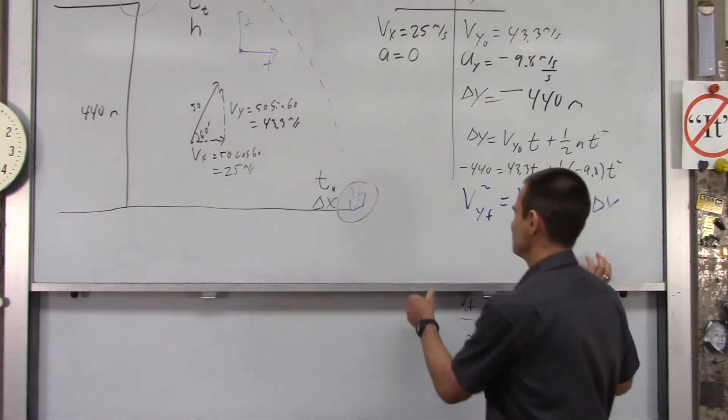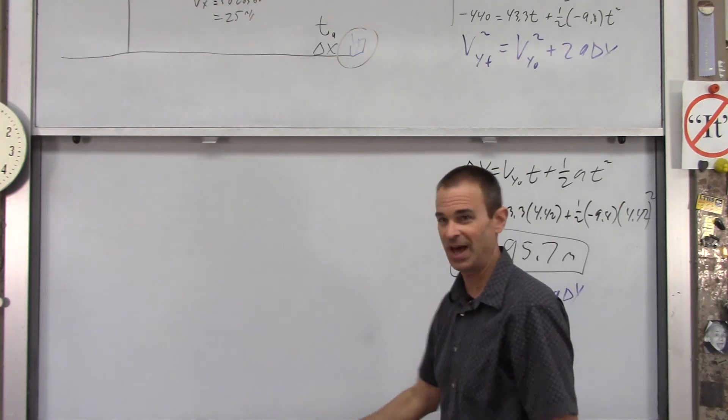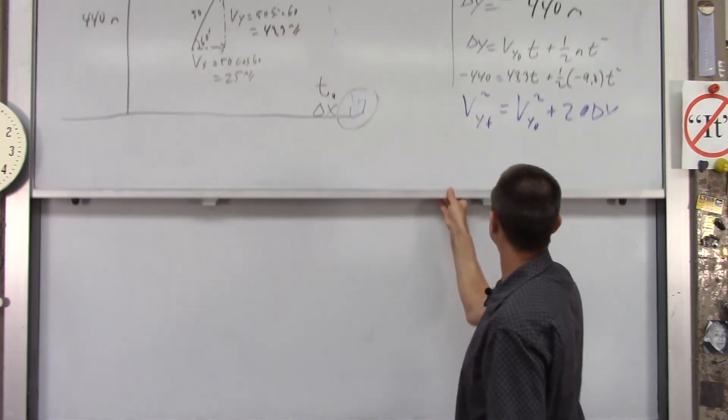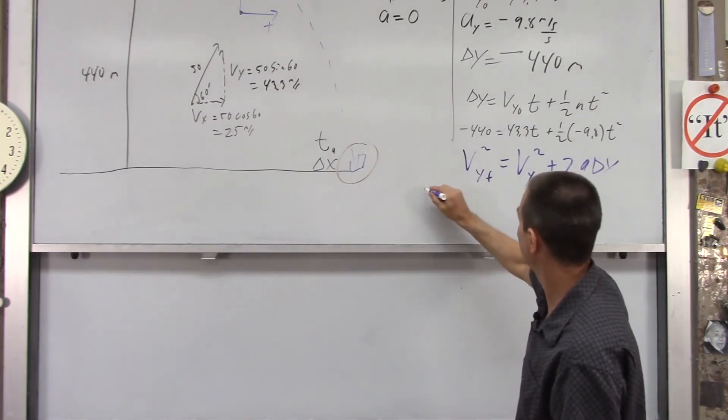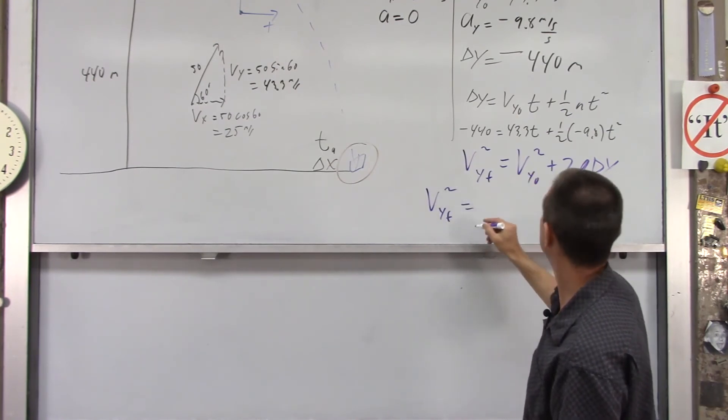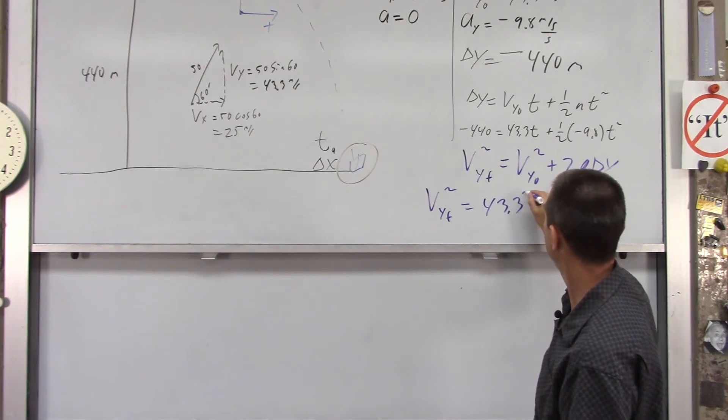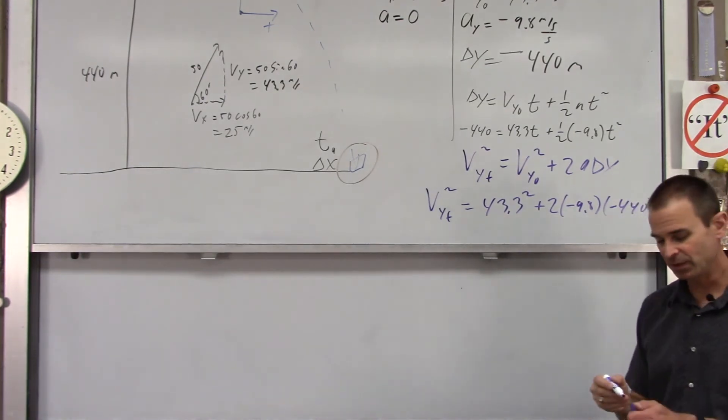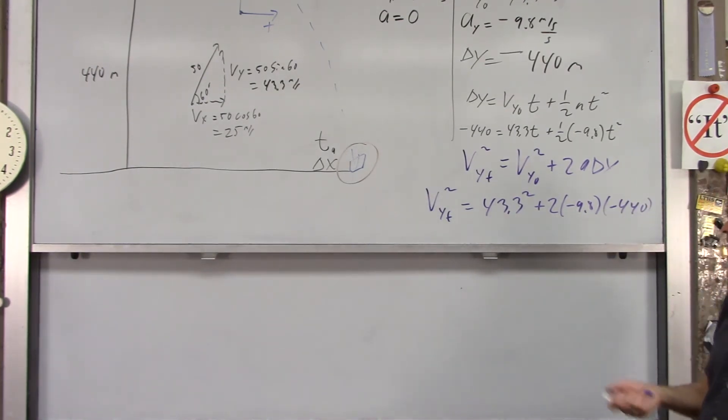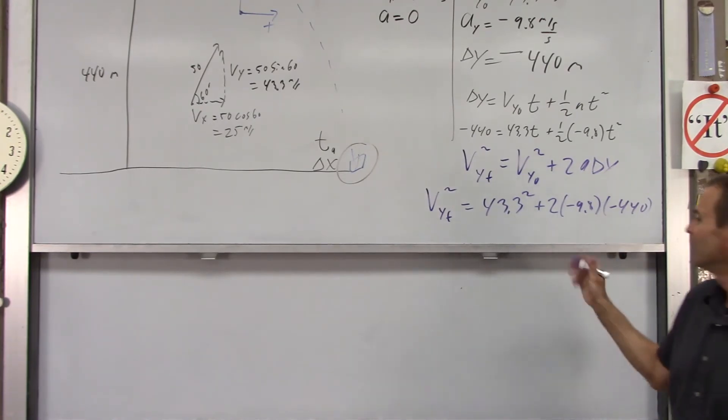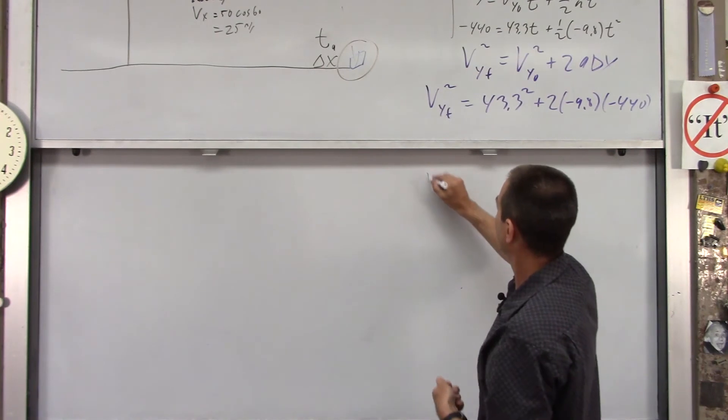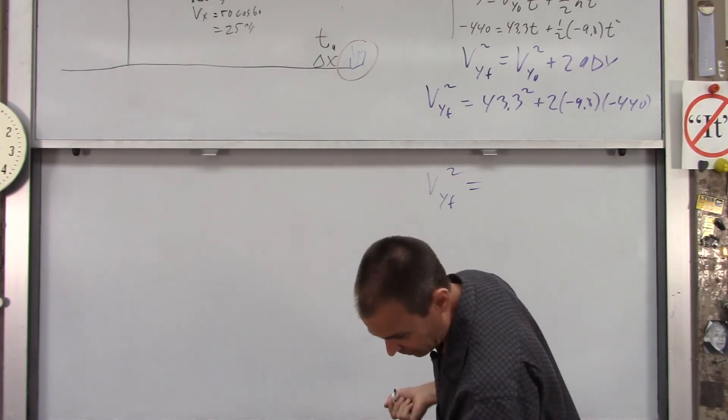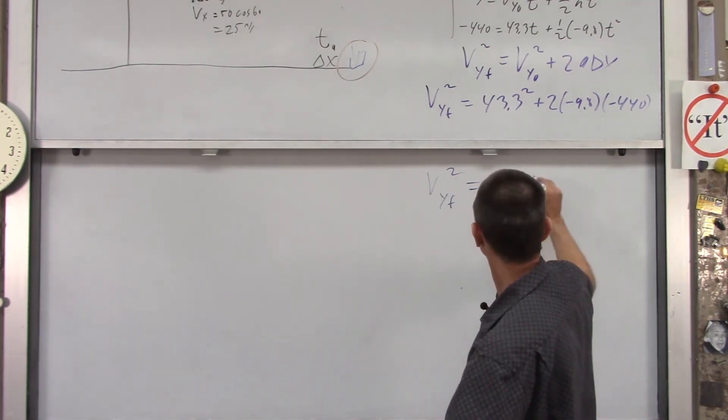Now, here you're going to have to be careful with sign. So, having said that, let's plug in what we know. I'm trying to find vy final. I don't know that. It's squared equals vy0, which is 43.3 squared plus 2a is negative 9.8. Delta y is negative 440. I'll make a note here. Notice that this and this are both negative. When you multiply them out, the negatives drop out. So, everything here is positive.